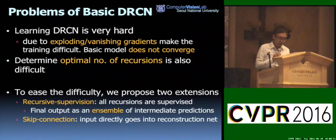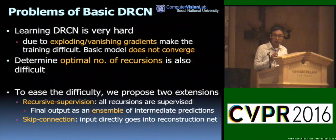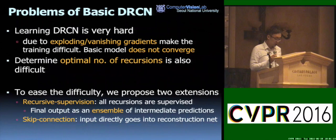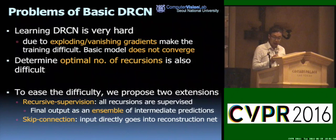The basic model itself was not perfect. While the recursive model is simple and powerful, training a deeper recursive network is very difficult. The most severe problems are vanishing and exploding gradients. Additionally, there is an issue with finding the optimal number of recursions. To address these difficulties, we propose two new learning techniques: recursive supervision and skip connection. We supervise all recursions to smooth the effect of vanishing or exploding gradients and ensemble all intermediate predictions to get the final output. We also connect the input directly to the reconstruction net to keep the input intact.